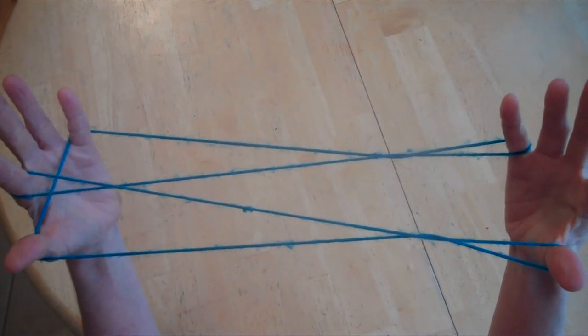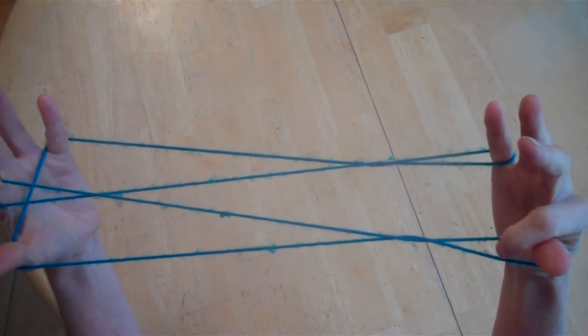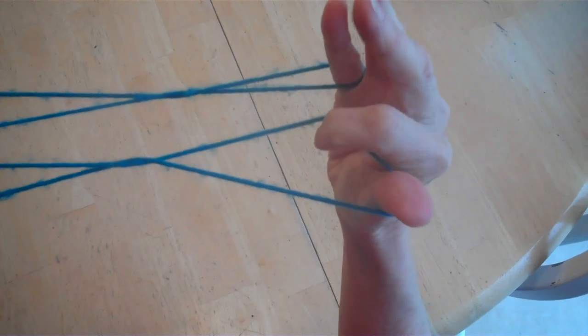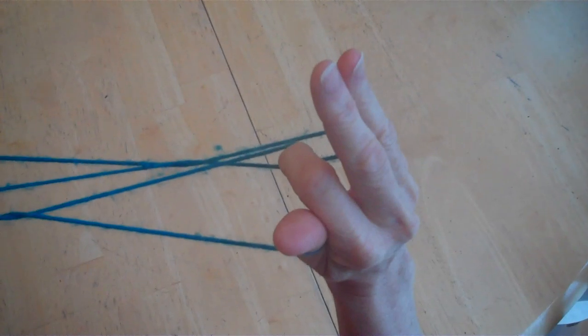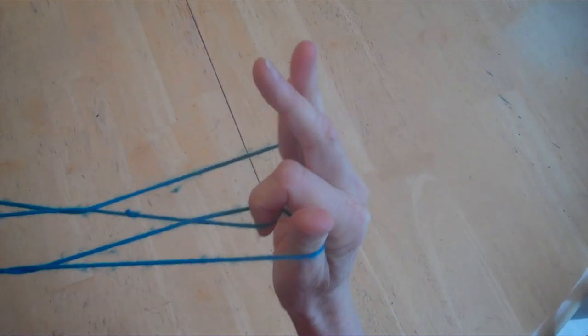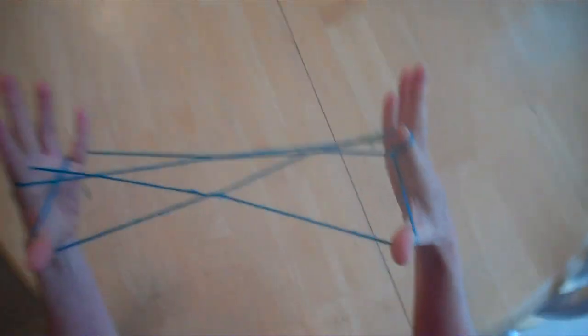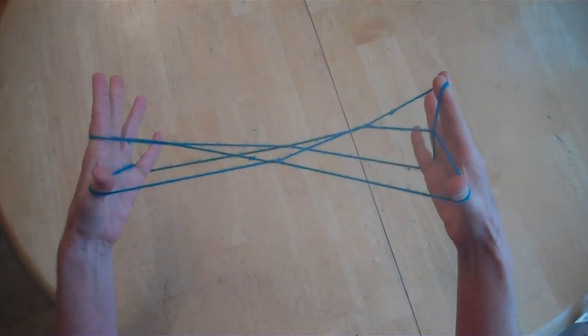This next part's a little bit tricky. Take your right pointer, you're going to reach in between the two thumb strings and then you're going to go over and pick up this first one in front of the pinky. This is what you're looking at from this position.